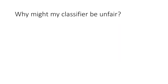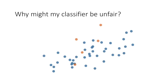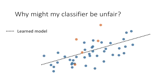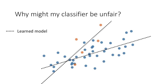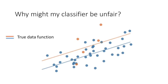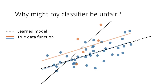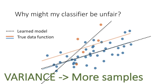What are some reasons that a classifier would show different accuracies for each group? Consider fitting a line to this data. We could fit one model or two models, but because orange dots are underrepresented, we don't learn a good model based on the true data-generating function. Orange dots will have higher error than blue dots. We call this error due to variance, and we can solve it by collecting more data.